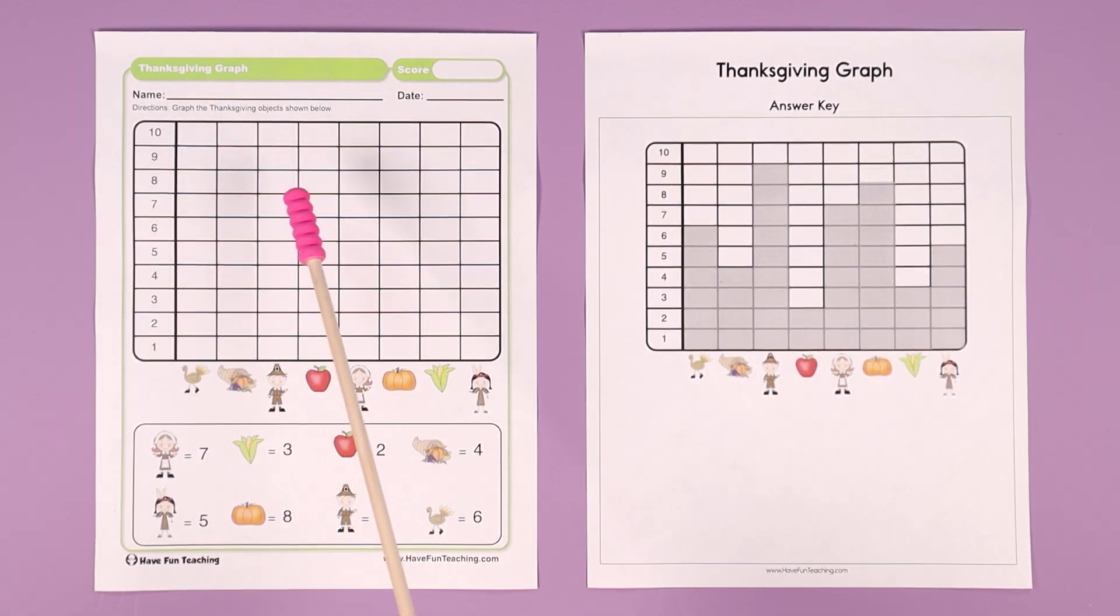Graph the Thanksgiving objects below. Pretty simple. So you have a graph here. It's a bar graph. And you have images, Thanksgiving images, below the graph.